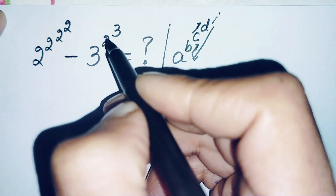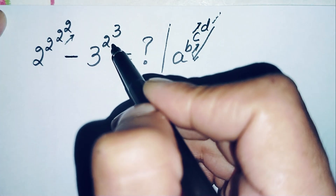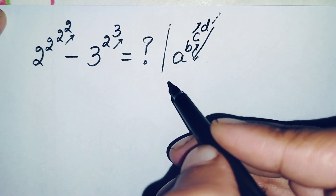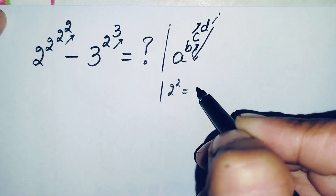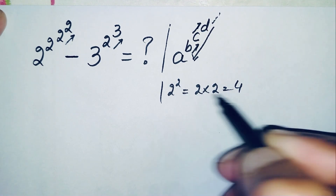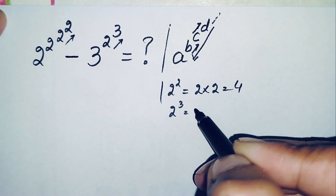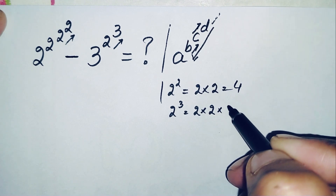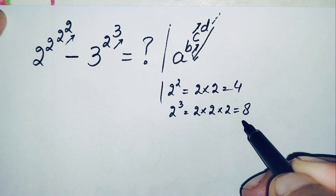According to this property, we will first solve 2 raised to power 2, and also 2 raised to power 3. The value of 2 raised to power 2 means multiplying 2 two times: 2 times 2 is 4. The value of 2 raised to power 3 means multiplying 2 three times: 2 times 2 is 4, and 4 times 2 is 8. So 2 raised to power 3 is 8.